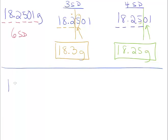Let's try another example: 18,506 meters. We need to determine the number of significant digits — 1, 2, 3, 4, 5. So there are five significant digits.